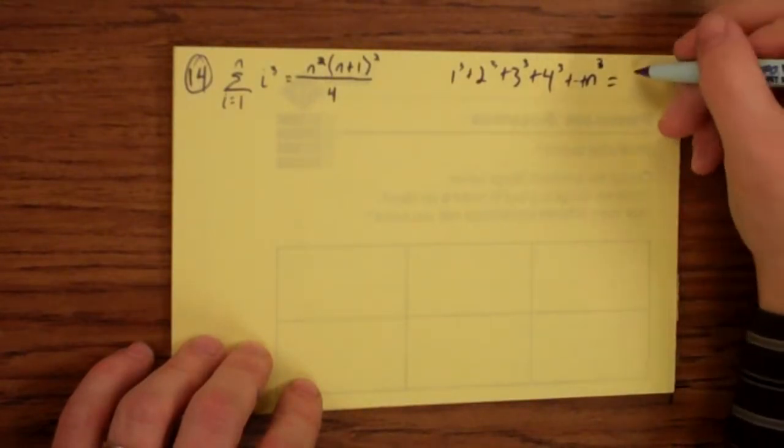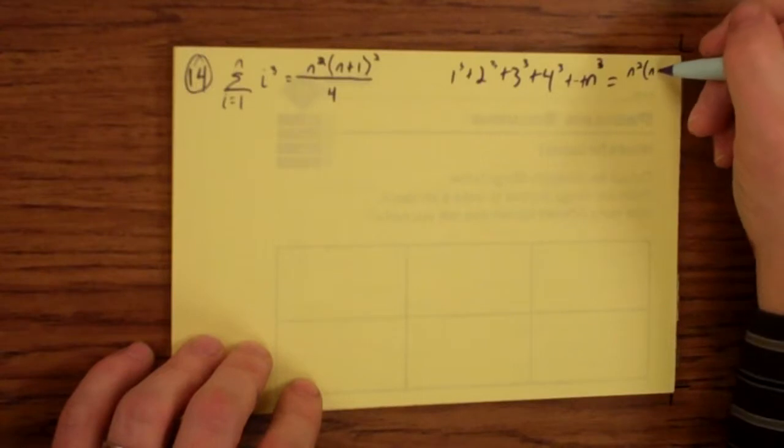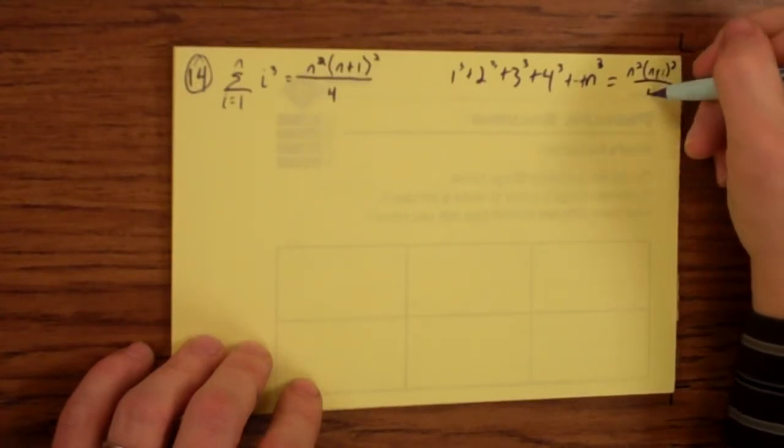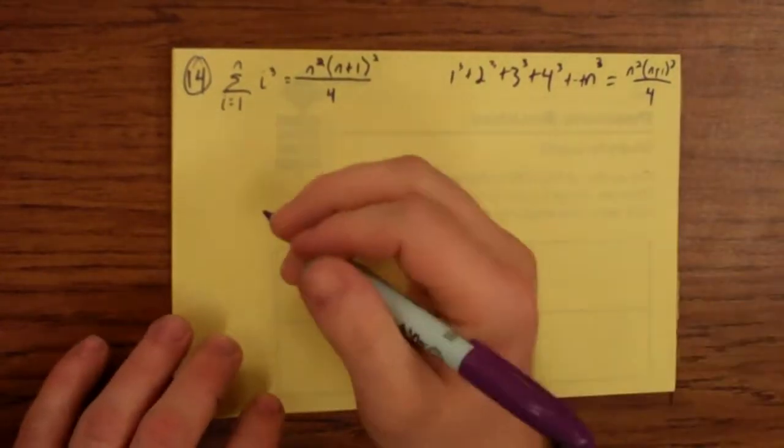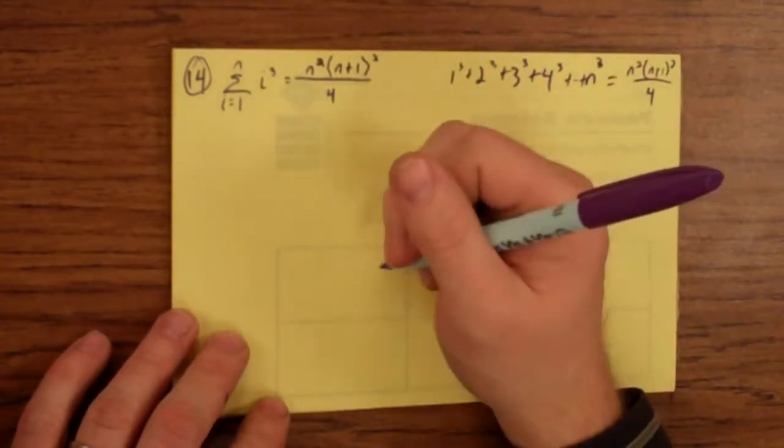They want us to show that that is n squared times n plus 1 squared over 4. So let's set about doing that.